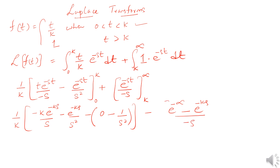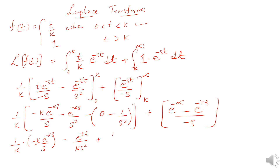Collecting terms and multiplying through by 1/k, we have: 1/k times the quantity negative k times e to the power negative ks over s, minus e to the power negative ks over ks squared, plus 1 over ks squared, plus e to the power negative ks over s. The first and last terms cancel each other out.